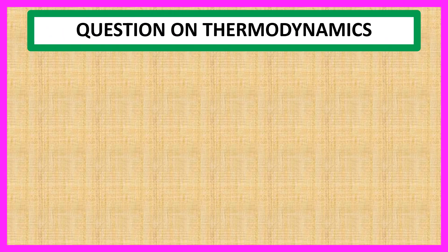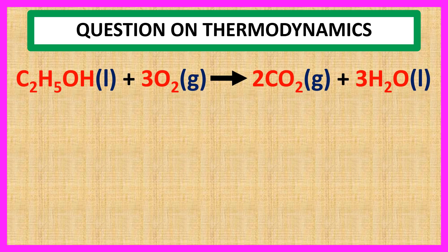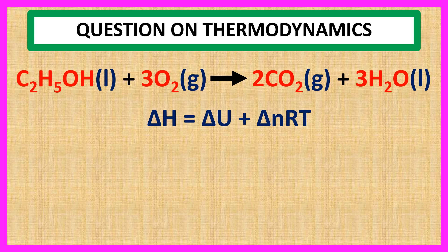The given reaction is C2H5OH liquid plus 3O2 gas to 2CO2 gas plus 3H2O liquid. We know del H is equal to del U plus del N RT,